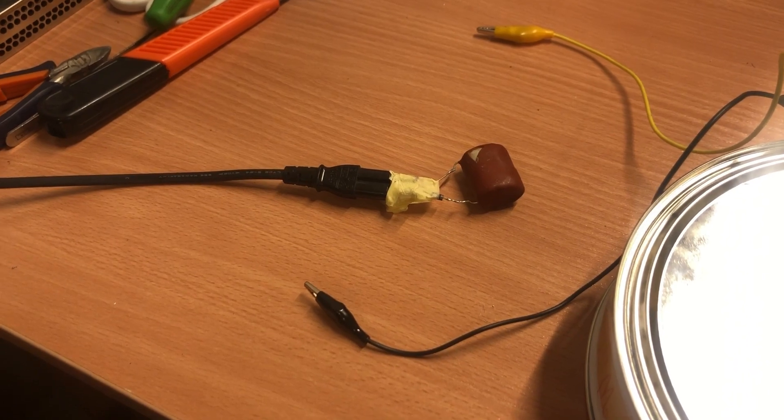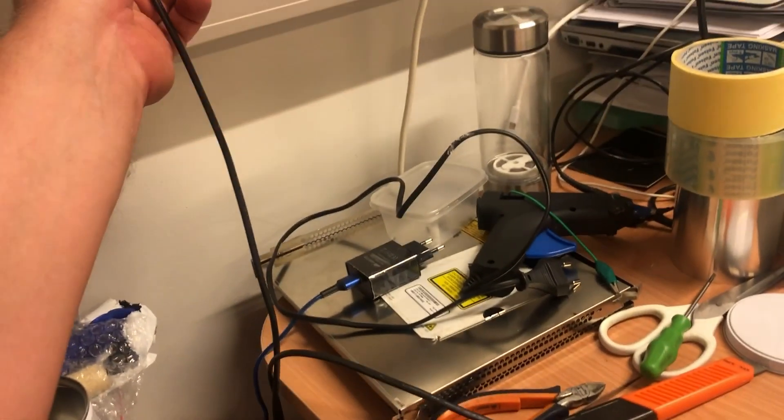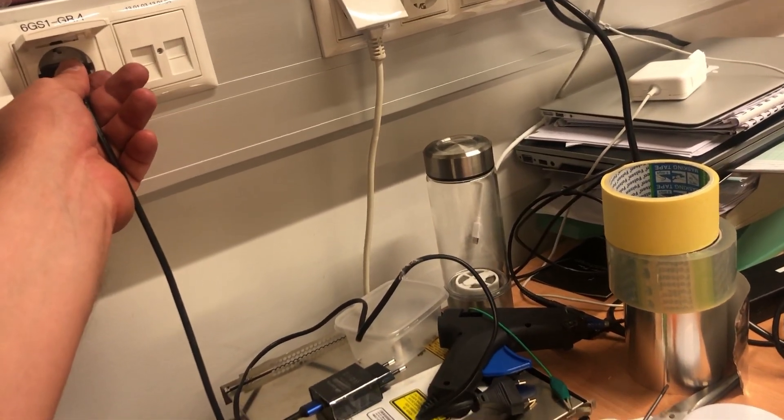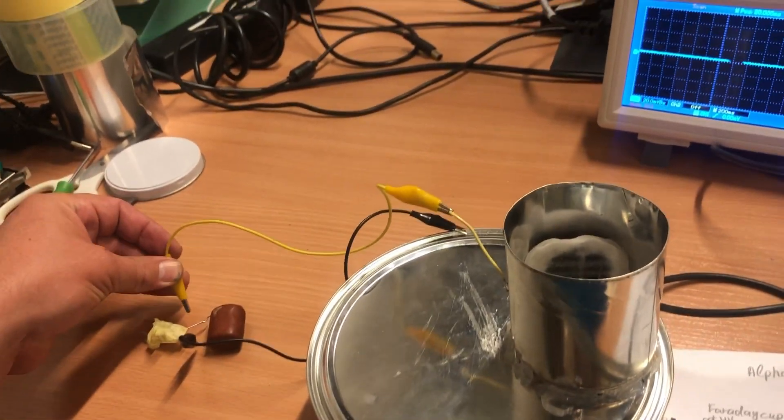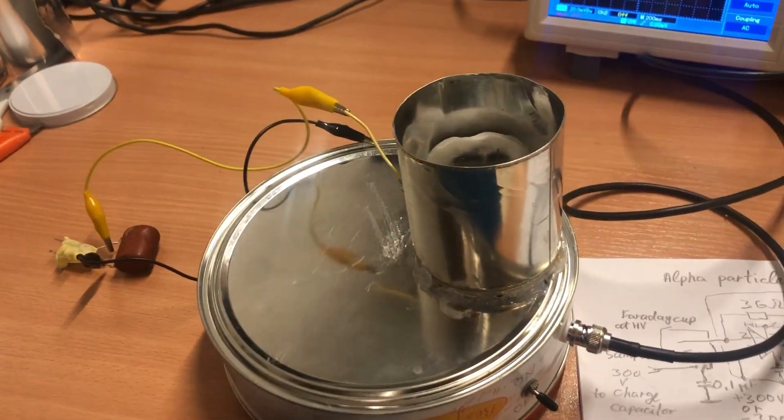Capacitor is charged to 300 volts by connecting to 220 volt mains. And after charging it is carefully connected to the Faraday cap.